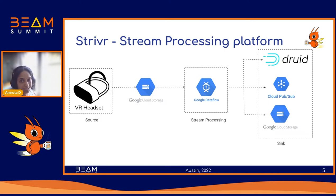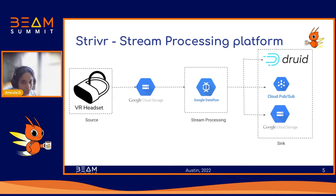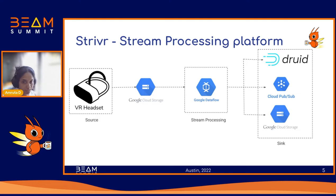To give a bird's eye view into the stream processing platform we have: we collect data from the headsets as people are training — metrics, events like head tracking, hand movements, quiz answers — all happening in real time. All of this is uploaded to the cloud into GCS buckets. We then use a PubSub notification setup with these buckets to process all files in real time using Dataflow. Once the data is processed and enriched, we have multiple sinks: GCS for a data lake, Druid as an OLAP data store for aggregated metrics, and a Google PubSub sink for further downstream processing.